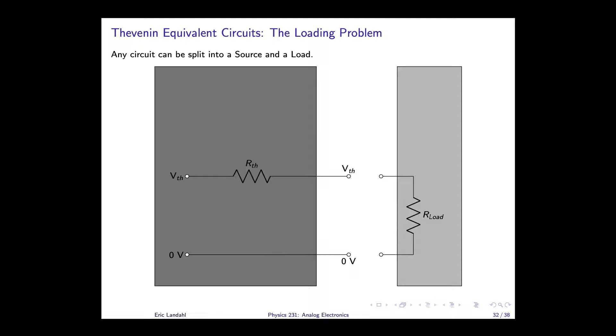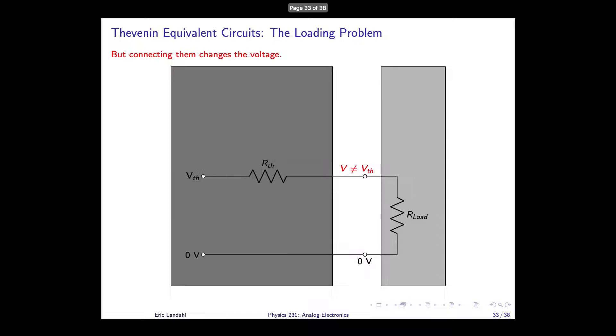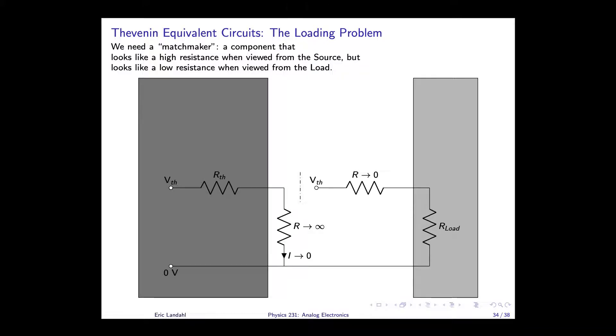So here's a quick summary. Any circuit can be split into a source, that's the dark gray box, and a load, that's the light gray box. But connecting them changes the voltage. That is, the voltage is no longer the unloaded Thevenin voltage when they're connected, but it's going to drop. And that is an unsolvable problem if we restrict ourselves to using resistors, and is often described as the loading problem.